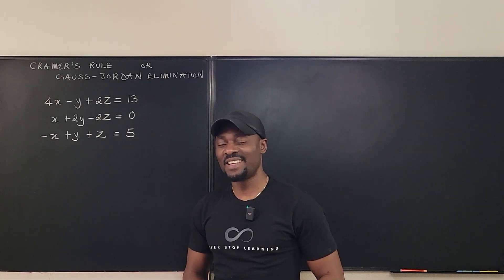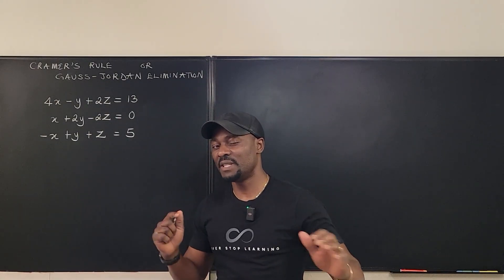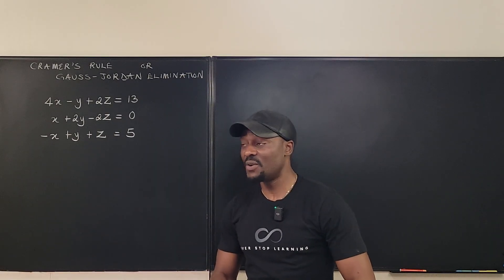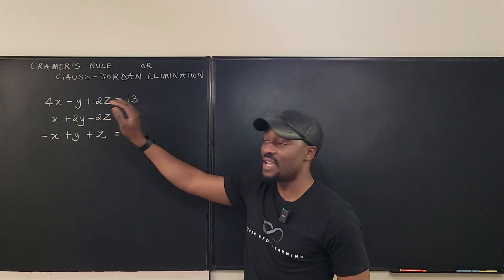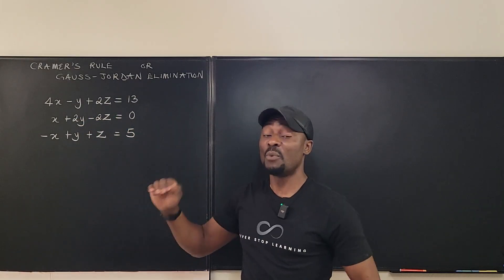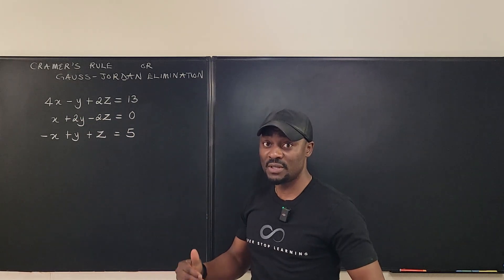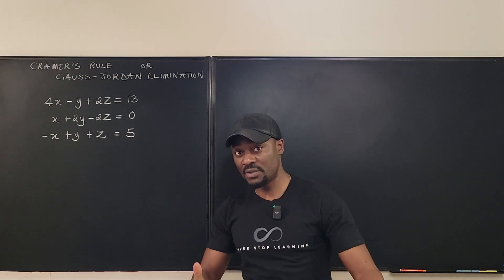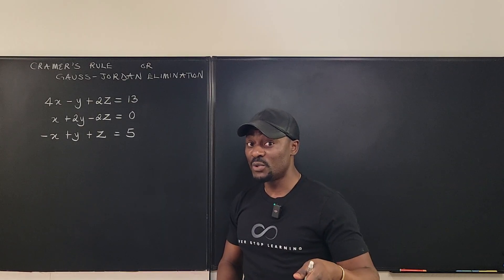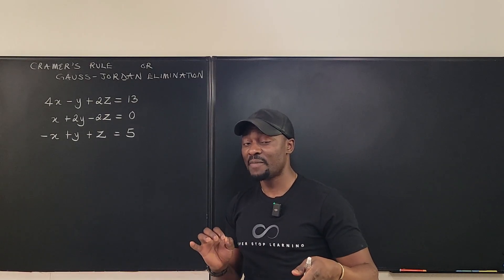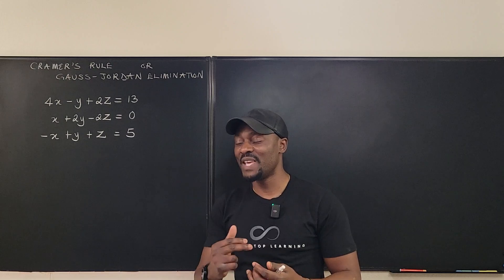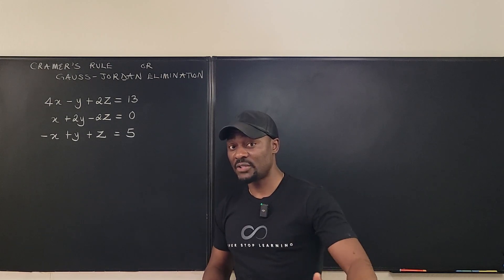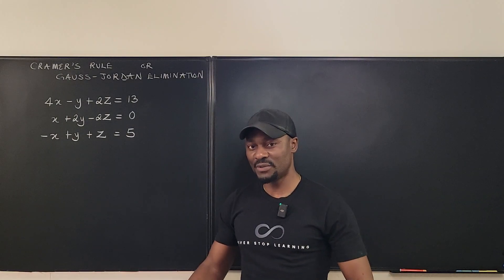Welcome to another video. Let's take a quick trip into linear algebra again and solve a system of equations. In this video I'm going to solve this system of equations using Cramer's rule and also using the Gauss-Jordan elimination method. You choose what method works for you. While using Cramer's rule I will attempt to use both the cofactor expansion method and the rule of Sarrus.